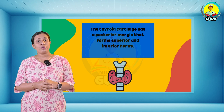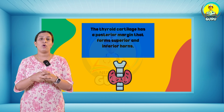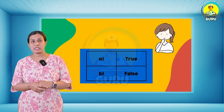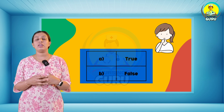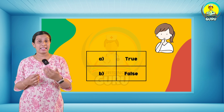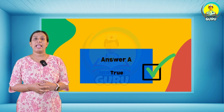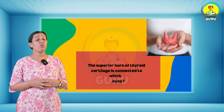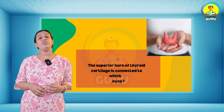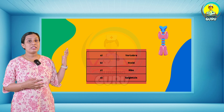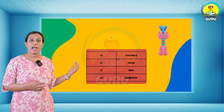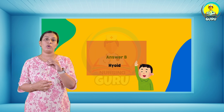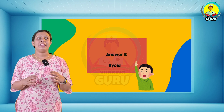Seventh question — true or false: the thyroid cartilage has a posterior margin that forms superior and inferior horns. The answer is true. True or false questions are common in your examination. Eighth question: the superior horn of the thyroid cartilage is connected to which bone? Options are vertebrae, ribs, hyoid, and epiglottis. Answer option B — ribs — is the right answer.